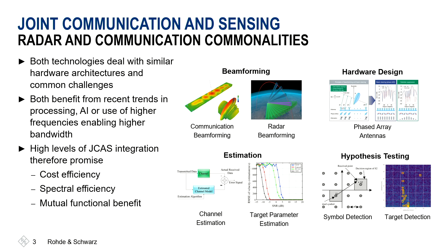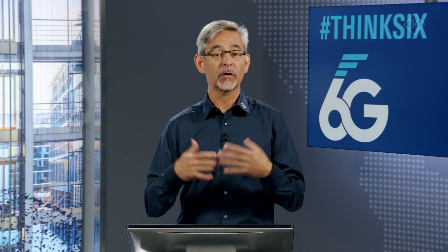Next, let's look at the commonalities between both worlds. In both technologies, we deal with similar hardware architectures and common challenges. We have beamforming applied with phased array antennas very commonly. We do something like target parameter estimation in radar and channel estimation in communication. Also, symbol detection and target detection can be similar. Both technologies benefit from recent trends like artificial intelligence, and higher frequencies with higher bandwidths are also very supportive for both.